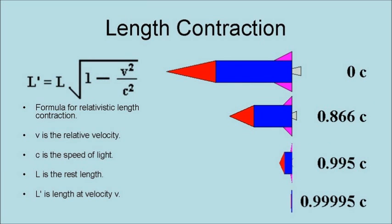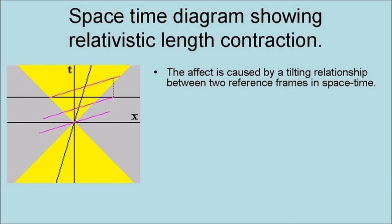Relativistic length contraction is a foreshortening of the length of an object in the direction of relative motion. At normal relative speeds, the effect is too small to see. Here is a spacetime diagram showing relativistic length contraction. The effect is caused by a tilting relationship between two frames of reference in spacetime.